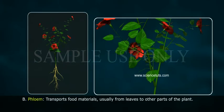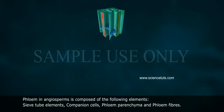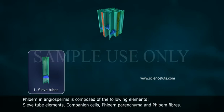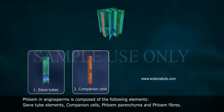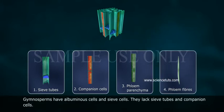Phloem transports food materials, usually from leaves to other parts of the plant. Phloem in angiosperms is composed of sieve tube elements, companion cells, phloem parenchyma, and phloem fibres. Gymnosperms have albuminous cells and sieve cells; they lack sieve tubes and companion cells.